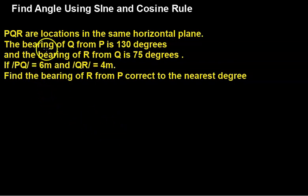The question says P, Q, and R are locations in the same horizontal plane, and the bearing of Q from P is 130 degrees. The first thing is to pick the bearing of Q from P. 130 degrees is more than 90, so I shall have it downwards this way.